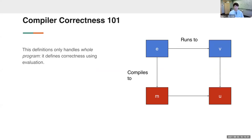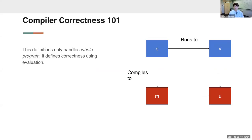We want to generalize to talk about linking. The next theorem we might prove is correctness of separate compilation: if we have two source modules e and e-prime and link them in the source language, running to value v, we can separately compile them to m and m-prime, link in the target language, and run to some u, where u and v are related. This is a stronger theorem with separate compilation of modules.